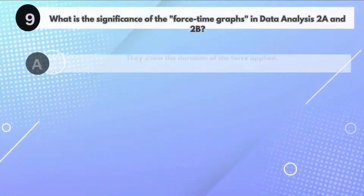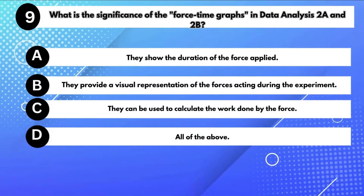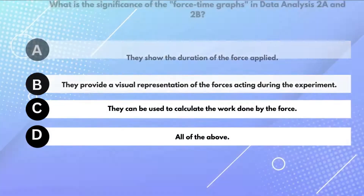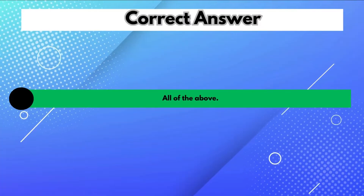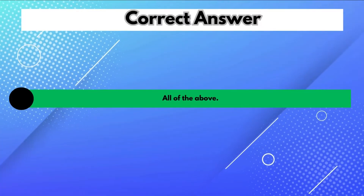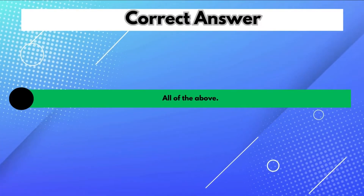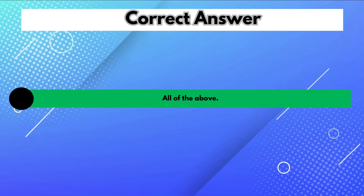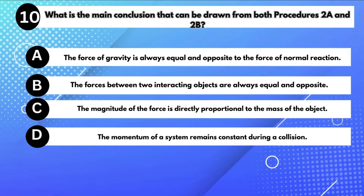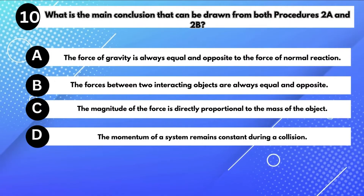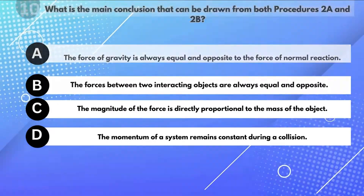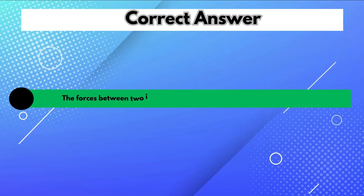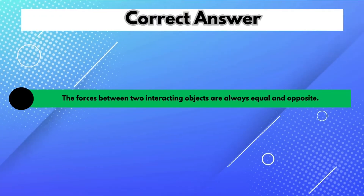What is the significance of the force-time graphs in data analysis 2A and 2B? Answer D: All of the above — they show the duration of the force applied, provide a visual representation of the forces, and can be used to calculate the work done. What is the main conclusion from both procedures? Answer B: The forces between two interacting objects are always equal and opposite.